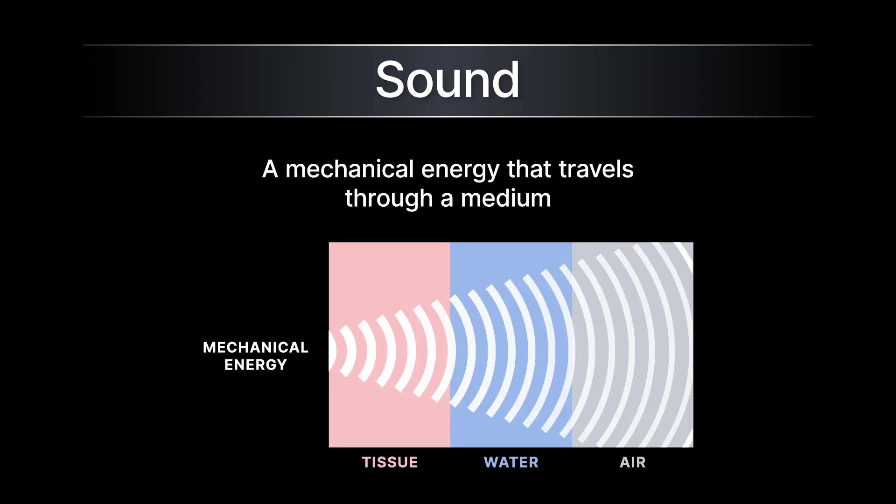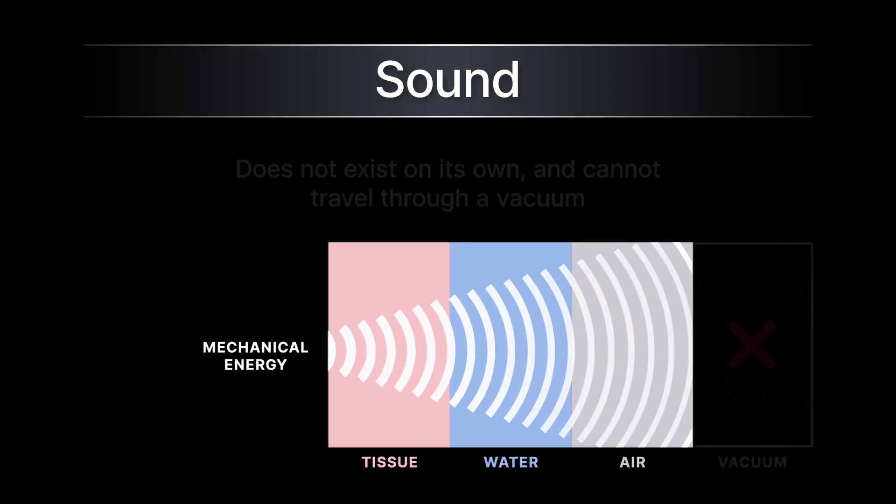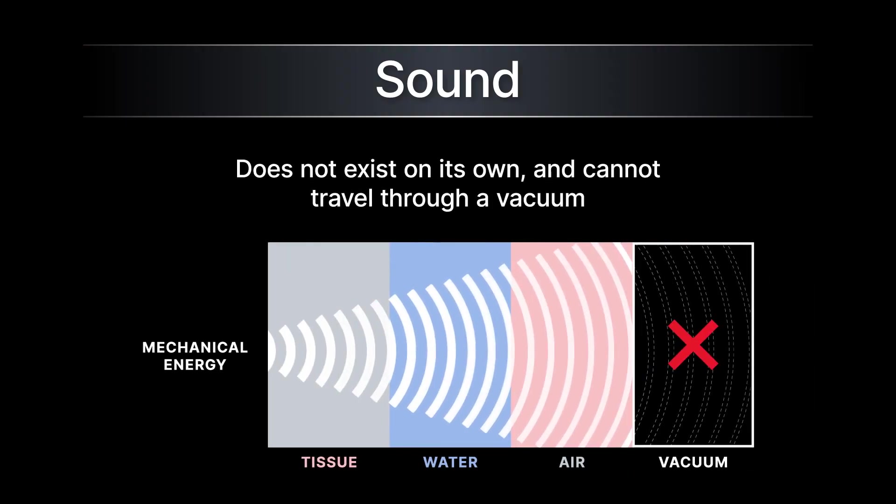Next, we need to define sound. Sound is a mechanical energy that travels through a medium like air, water, or tissue. Sound does not exist on its own and cannot travel through a vacuum. For example, when we speak, the vibrations of our vocal cords create the sounds of our voice, which can be heard because it travels through particles of air.